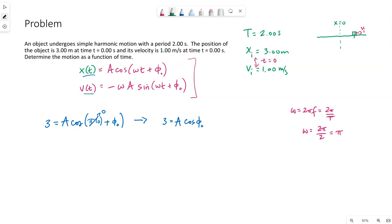Let's go ahead and plug in what we know to the velocity equation as well. So we know the initial velocity at time equals zero is one meter per second. That's going to equal negative omega A sine of omega times zero, because we're talking at time equals zero. So this becomes one is equal to negative omega is pi. In fact, I'm not going to plug it in yet. And then I'm going to have sine of phi naught. So I know omega, I do not know A, I do not know phi. A and phi naught are both in these two equations.